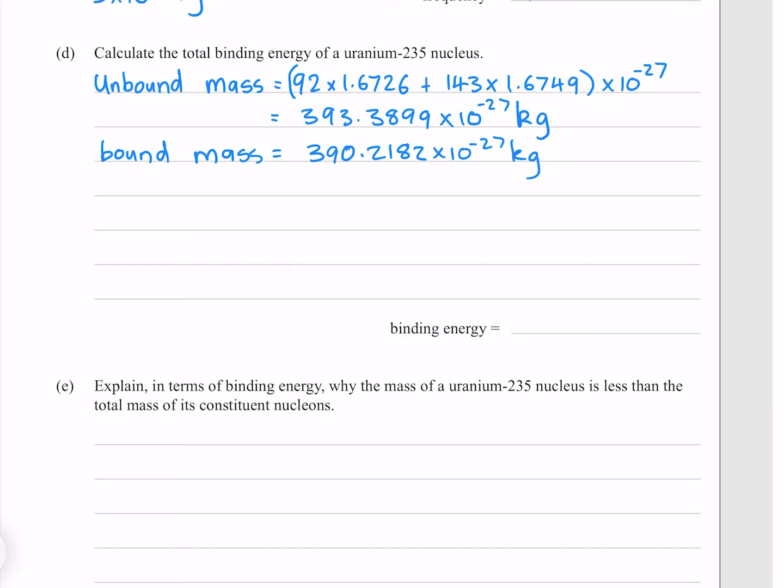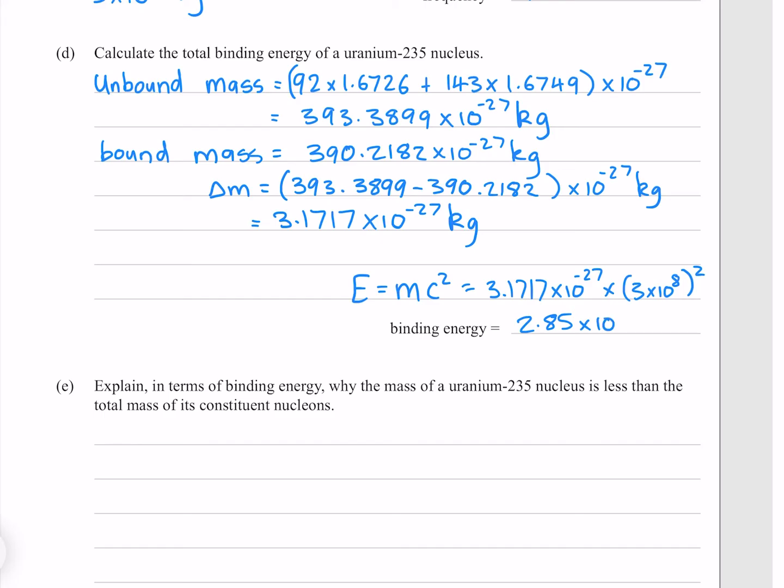And now to find the difference, to find our mass deficit. Which gives me 3.1717 times 10 to the minus 27 kilogram. And now we can find our energy, knowing that E is equal to mc squared. Putting in our mass and the speed of light, which gives me 2.85 times 10 to the 10 joules, to 3 significant figures.